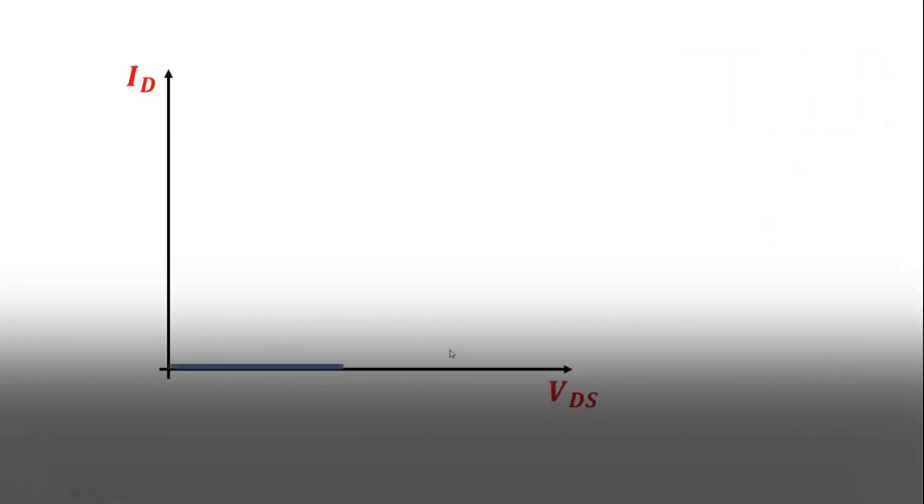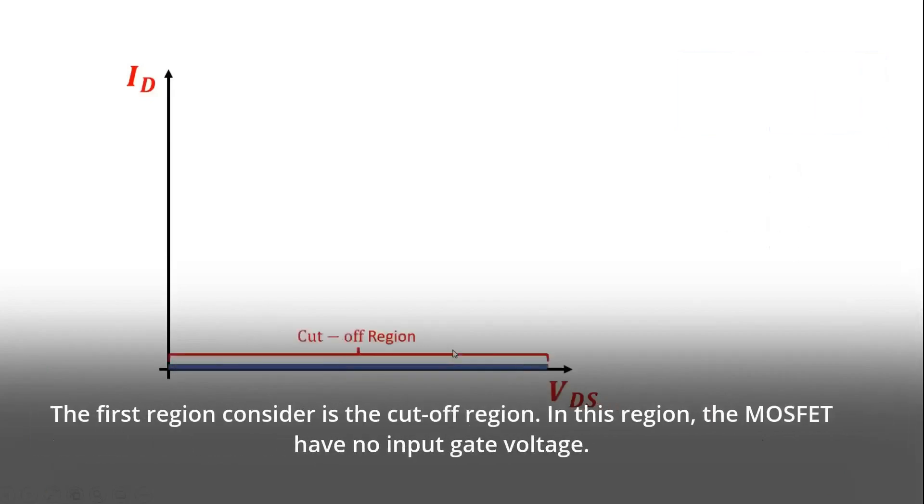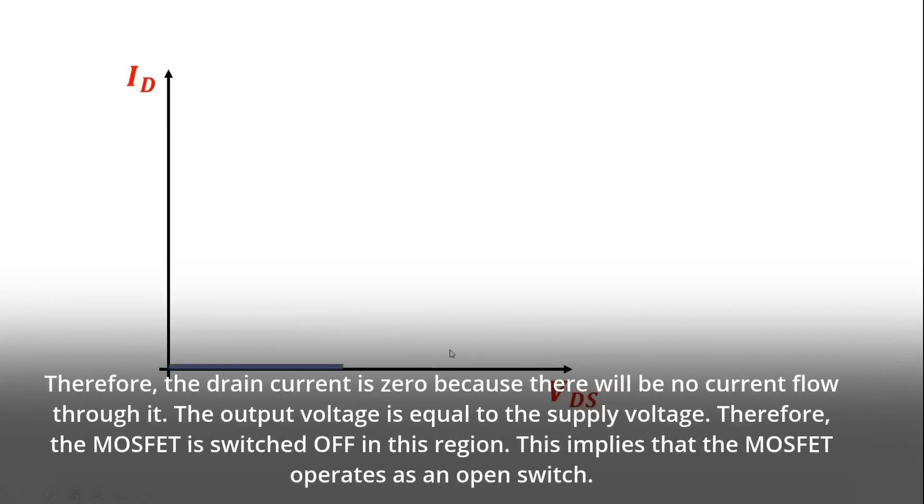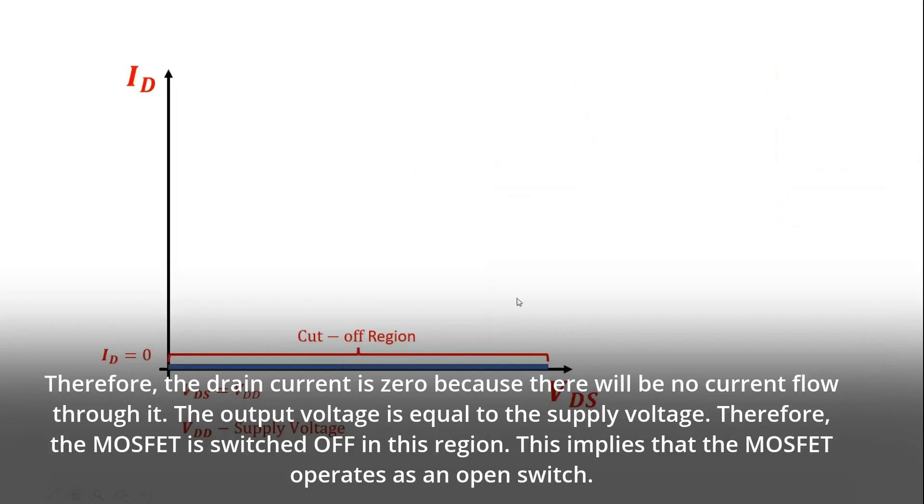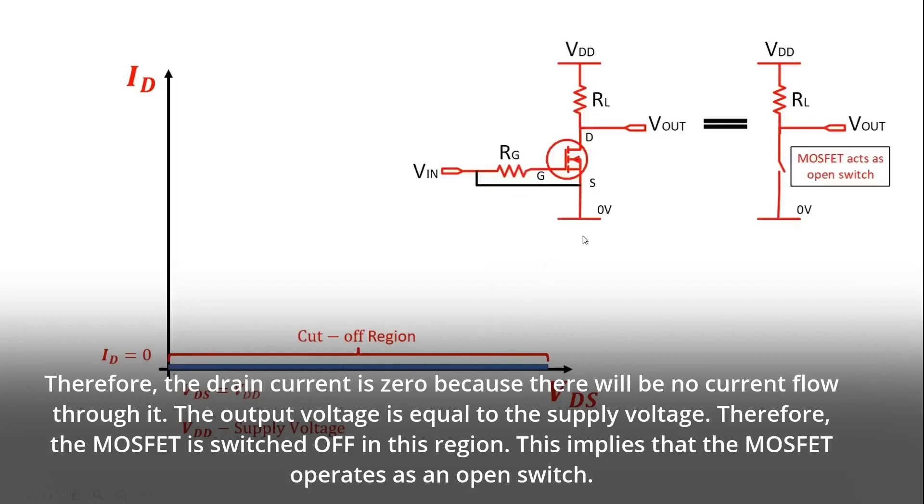The first region consider is the cutoff region. In this region, the MOSFET have no input gate voltage. Therefore, the drain current is zero because there will be no current flow through it. The output voltage is equal to the supply voltage. Therefore, the MOSFET is switched OFF in this region. This implies that the MOSFET operates as an open switch.